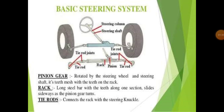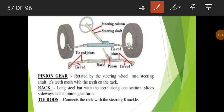The first component is the pinion gear, which is rotated by the steering wheel via the steering shaft. Its teeth mesh with the teeth of the rack. In the diagram, the steering shaft and tie rod are connected with the help of teeth — the steering shaft teeth and the tie rod teeth are connected to each other through this pinion gear.